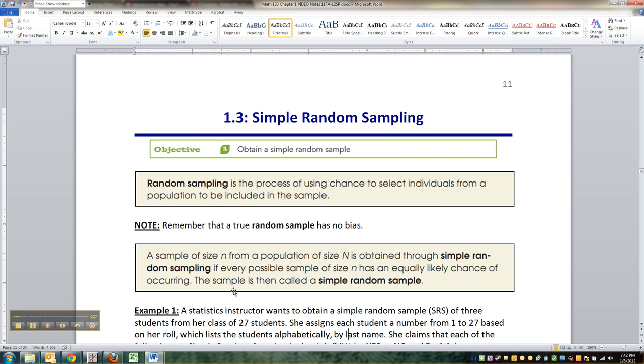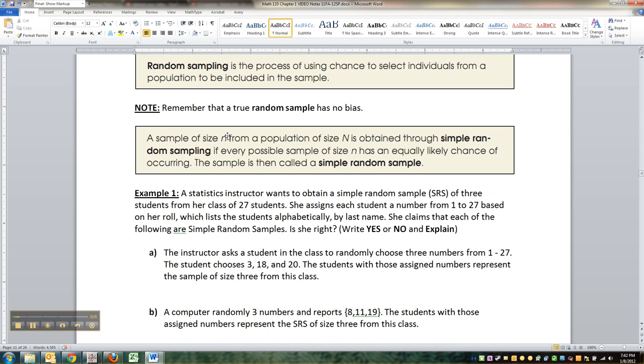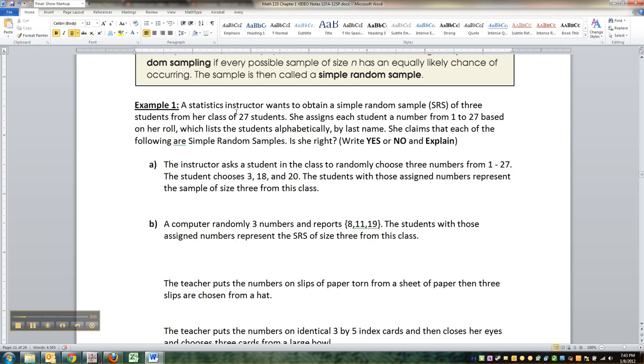So suppose you're going to take a sample of size lowercase n, like say a thousand people you're going to call from a population of size capital N, like the 300 million people in the US. So lowercase n is a thousand, capital N is 300 million. If you're going to obtain that sample through simple random sampling if every possible sample of size a thousand has an equally likely chance of occurring, that's called a simple random sample or SRS.